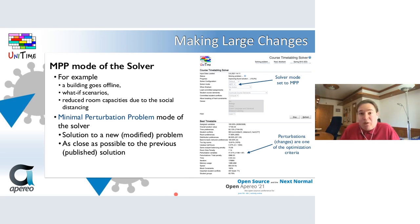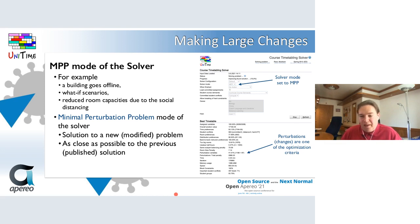Now let's talk about large changes. For these, we can run the solver in what we call MPP mode. MPP stands for Minimal Perturbation Problem, and it tries to find a new solution that is as close as possible to the original solution — for instance, one that has already been published. This is also very useful for doing various simulations and what-if scenarios.